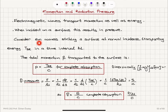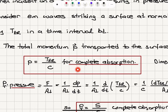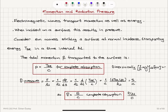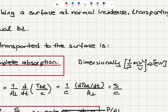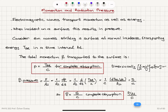Let's consider electromagnetic waves striking a surface at normal incidence, transporting energy T_ER (electromagnetic radiation) in a time interval delta T. The total momentum transported to the surface for complete absorption of the electromagnetic waves is the energy T_ER divided by the speed of light C. Does that work dimensionally? Well, energy — for example, one-half mv² (kinetic energy) — divided by some speed gives the dimension of momentum. So this is dimensionally correct.